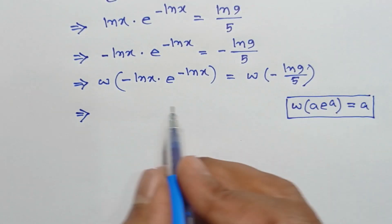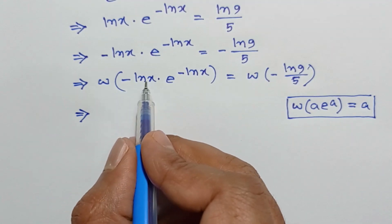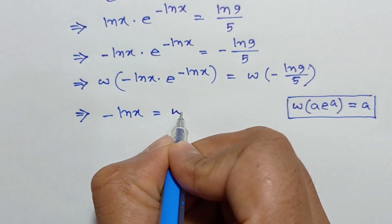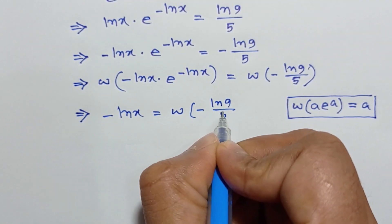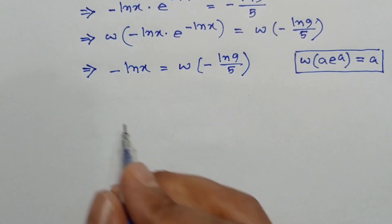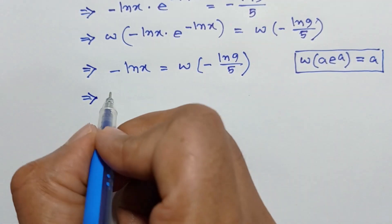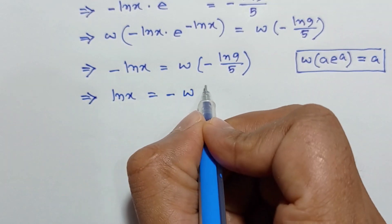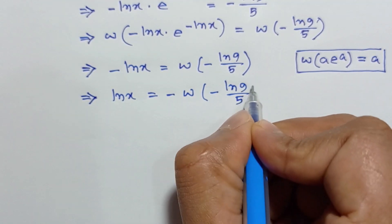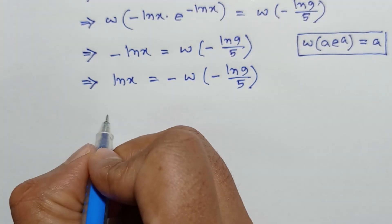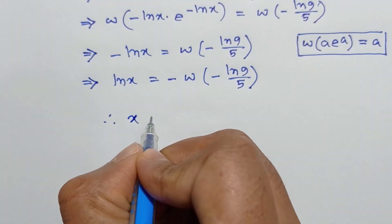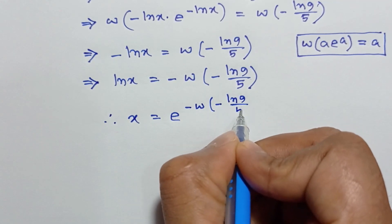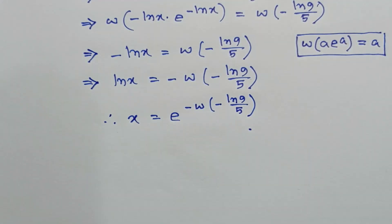Applying this formula, negative ln x is equal to W of negative ln 9 over 5. Multiplying both sides by negative 1, ln x equals negative W of negative ln 9 over 5. Therefore, x is equal to e to the power of negative W of negative ln 9 over 5. This is the value of x.